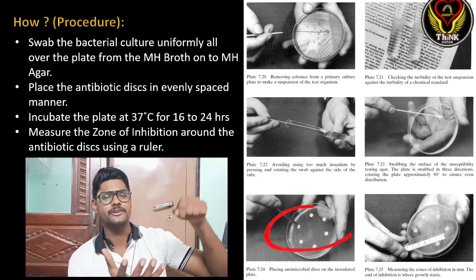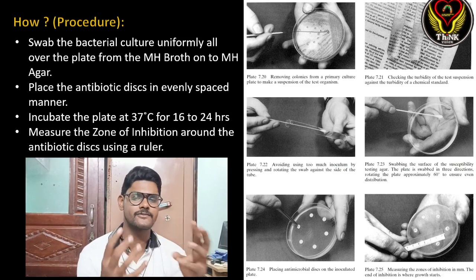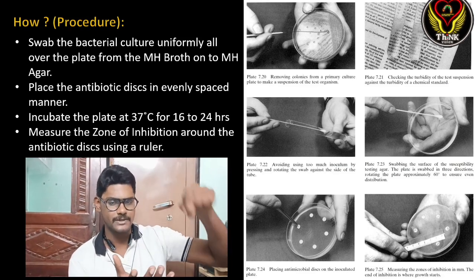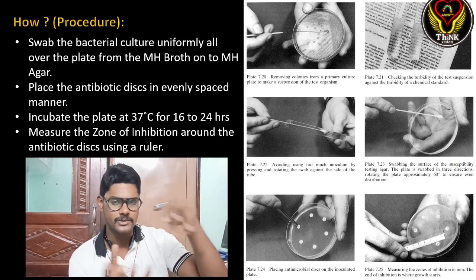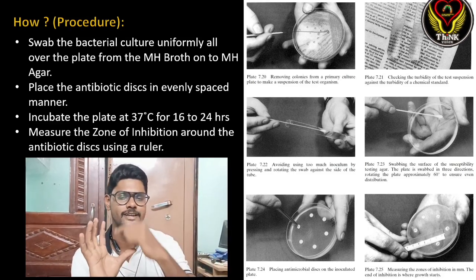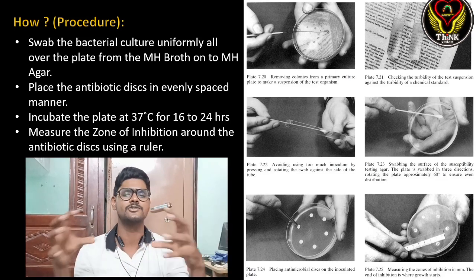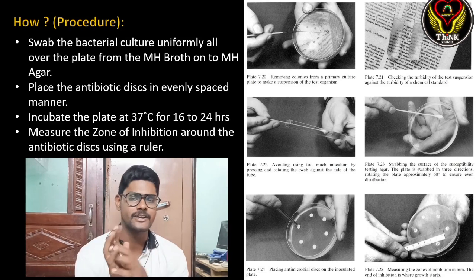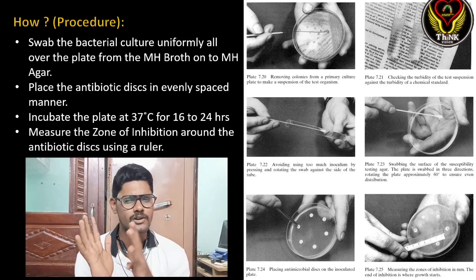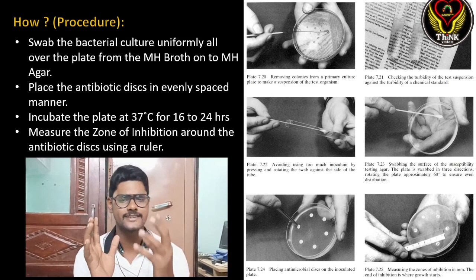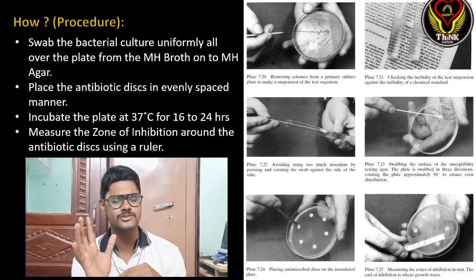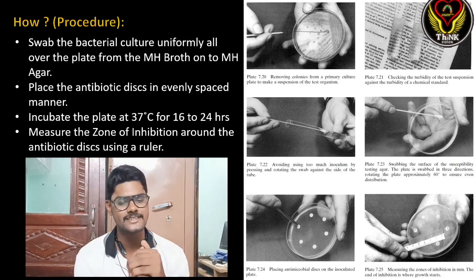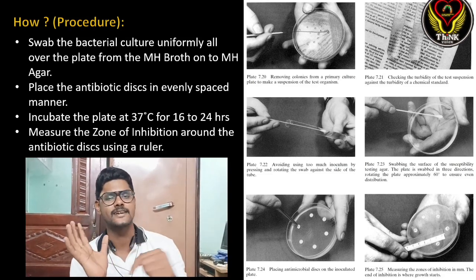The next step is to place the antibiotic discs in an evenly spaced manner. If you are testing three or four different antibiotics, choose the corresponding discs and space them evenly — they should not be crowded, otherwise the zones will mix and you can't read the results properly. At most you can keep around four to five antibiotic discs in the agar plate.